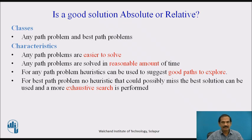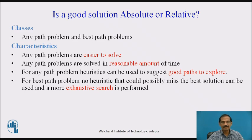The next key aspect is: is a good solution absolute or relative? Any path can get us to a goal state, or we select the best path to avoid time lapse and get the best solution. Any-path problems are solved in a reasonable amount of time, but best-path problems are more suggested because they have better heuristics associated with them. The best-path problem may risk missing the optimal solution and require exhaustive search to reach the particular goal.